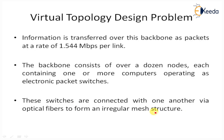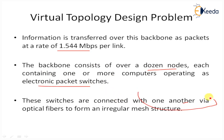Considering the backbone network, information is transferred over a backbone at the rate of 1.544 Mbps per link. The backbone consists of dozens of nodes, each containing one or more computers operating as electronic packet switches.